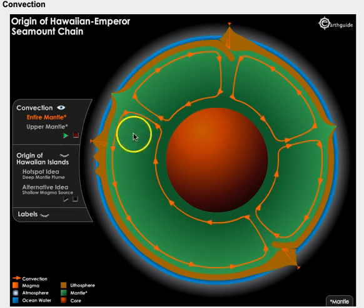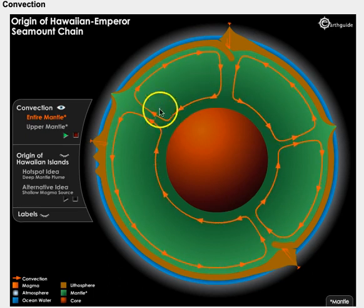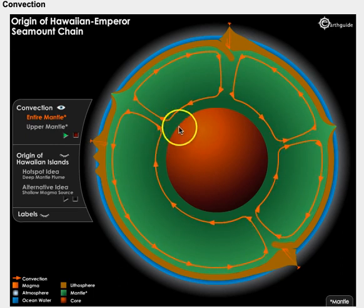Once again, magma convection is the driving force that moves the crust. First, it is heated up by the core so it becomes less dense, and the magma rises towards the crust.